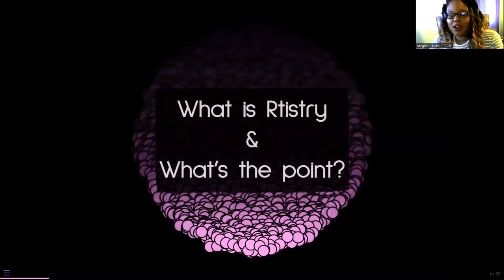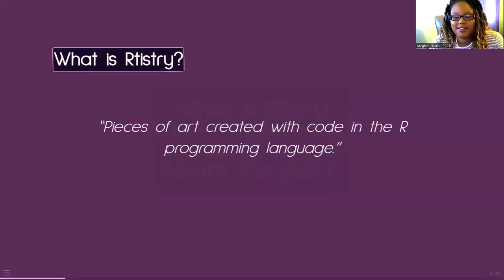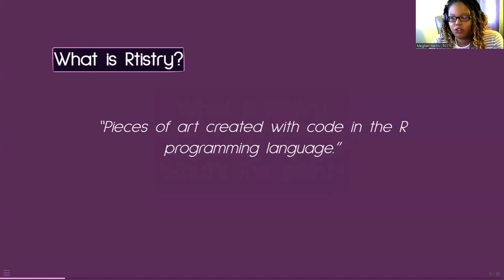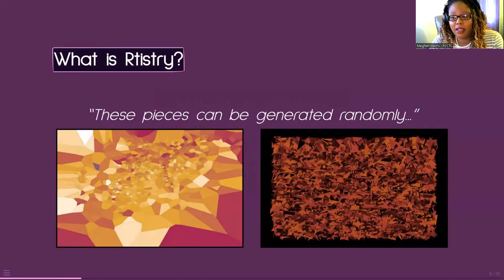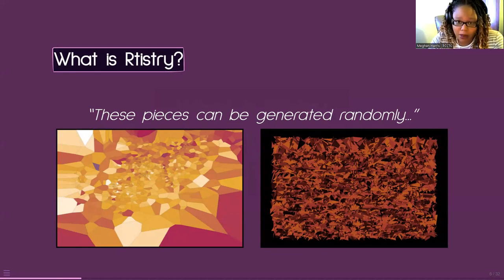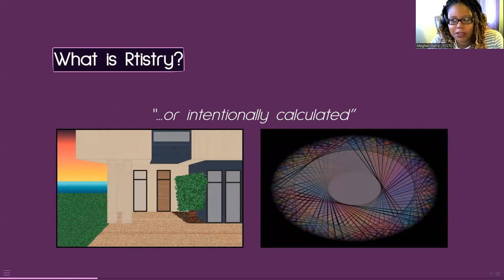So what is aRtistry and what is the point of it? My unofficial definition is that it's basically a piece of art created with code in the R programming language. When people hear about aRtistry or generative art, a lot of people think about randomly generated art — and that is totally a thing. You can have pieces where we're just feeding in an algorithm and it randomly selects things. These are two examples of some work I've done that's just randomly generated art.